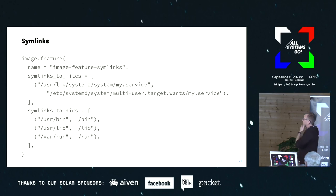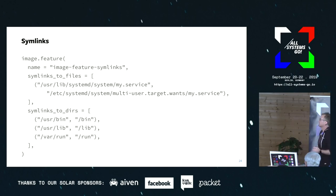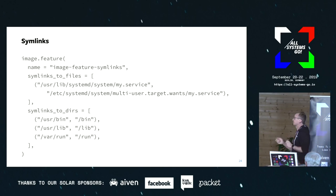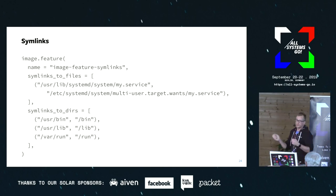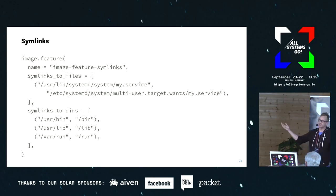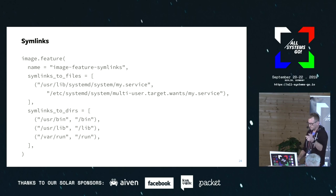Another feature is symlinks — you can create symlinks in the file system. This example creates a symlink to enable a multi-user target service inside a multi-user target. There are two modes of symlinks: files and directories. The reason they're different is because semantically on the file system they're treated slightly differently — the stat properties are slightly different, so we needed two different top-level attributes.